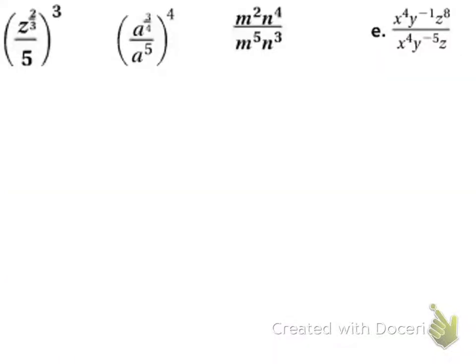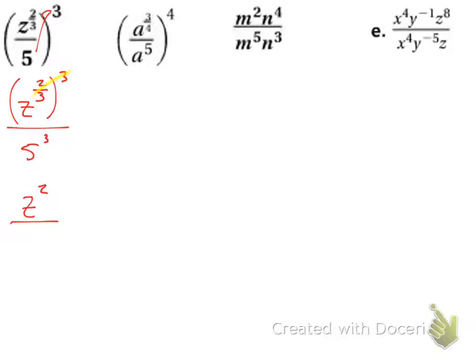With the first problem, since I see parentheses I want to take care of the 3 first. So z to the 2/3 power, taken to the 3rd power, means I multiply. I get z to the 2/3 power on top, and on the bottom I get 5 to the 3rd power. On the top, I multiply the exponents: 2/3 times 3 gives me 2, so z squared on top. On the bottom, 5 to the 3rd power is 125.